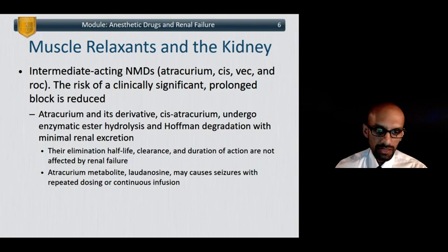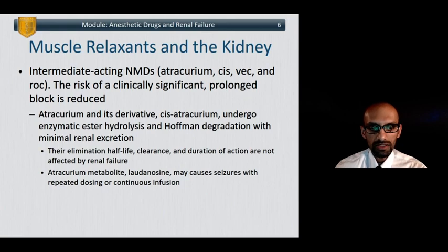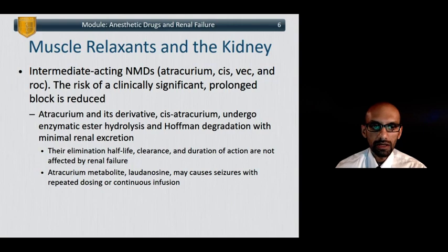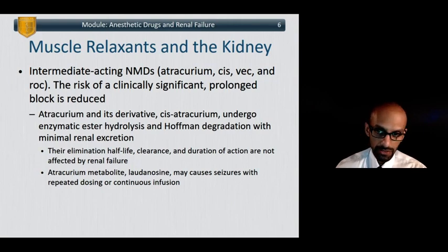Even though pancuronium is not technically available, it takes a few years for the ABA to jettison outdated drugs from the exam — they recycle a lot of this material. So definitely worth knowing. You have intermediate-acting neuromuscular relaxants like atracurium, cis-atracurium, vecuronium, and rocuronium.